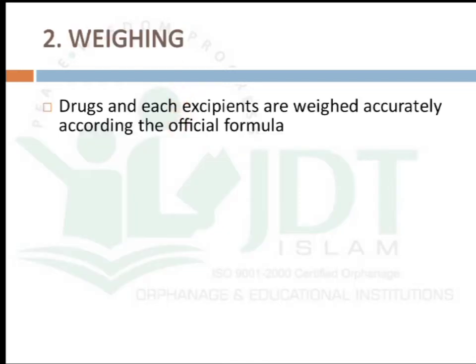The second step is weighing. Drugs and each excipient are weighed accurately according to the official formula or the master formula for a batch. We prepare a batch formula for separate batches and accurately weigh the pharmaceutical ingredient as well as the excipients used, depending on how many tablets are going to be produced.